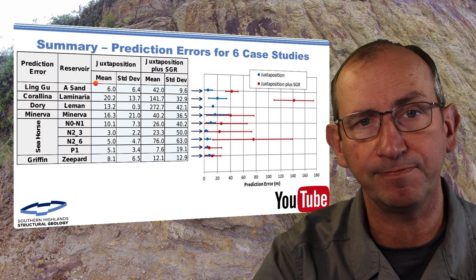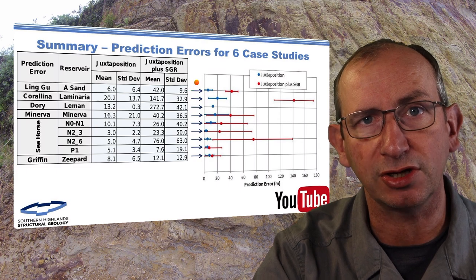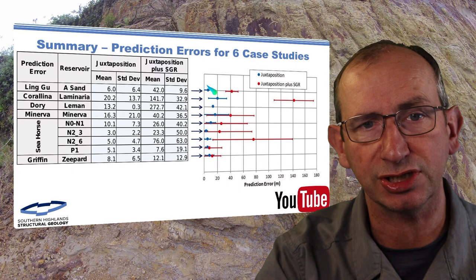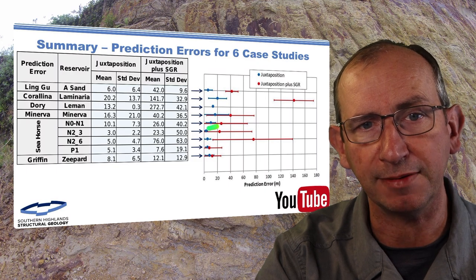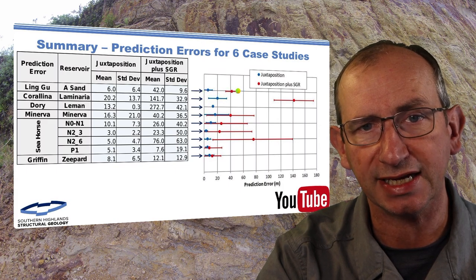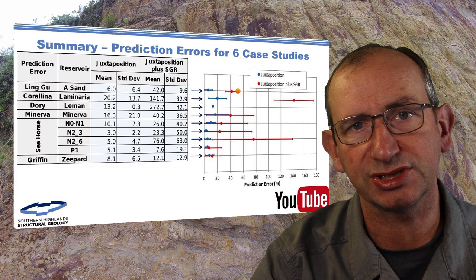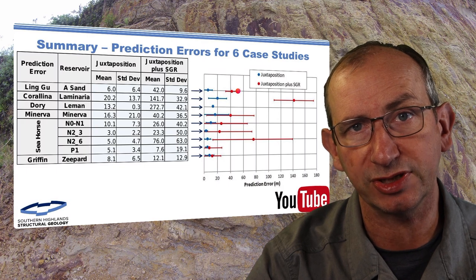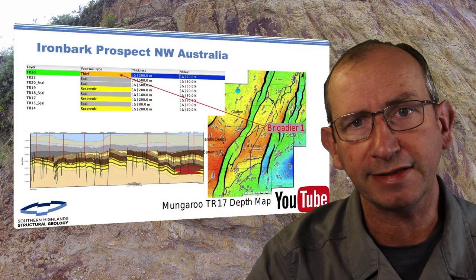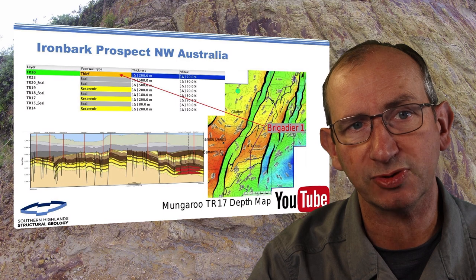Bill and I published a paper in the JELSOC special publication on faults — it's open access, available from ResearchGate. It shows that for juxtaposition cases, the blue points have small errors, while the SGR cases in red always over-predict, with a much larger error and wider standard deviation. In our view, SGR really isn't adding anything to the exploration case. The SGR will generally over-predict the column height, causing problems in exploration.